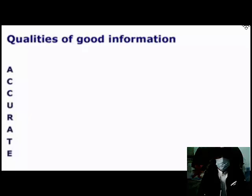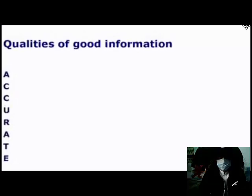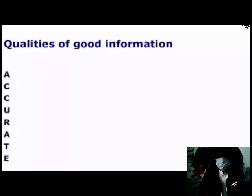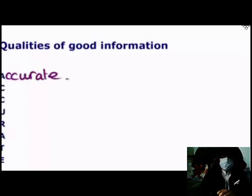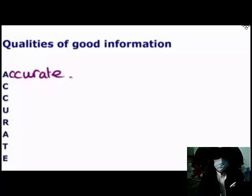Let's consider the following scenario: after I'm finished work today, I walk out of the office and I'm looking for directions to the nearest train station. I ask someone on the street for directions. They are going to provide me with information as to how to find the train station. The first quality is that good information needs to be accurate — it needs to be correct in order to be useful. If the nearest train station is two miles north and they tell me to walk south, that information was not useful.